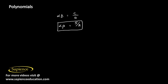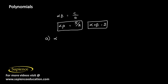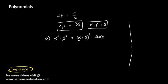We have α + β = 2 and αβ = 5/2. Now we can find α² + β². We use the algebraic identity: (a + b)² = a² + b² + 2ab.